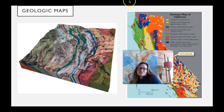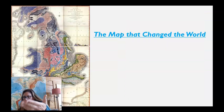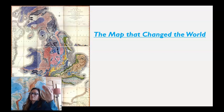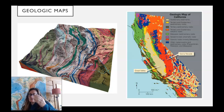Geologic maps have gotten more complicated and fancy over time. William Smith's map was done with pigments or colored pencils — however you made colors in the 1700s. These days it's often done in the field with colored pencils, then brought into the office and made into digital maps.